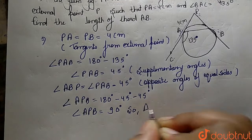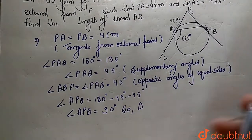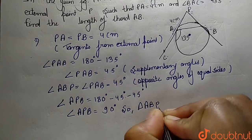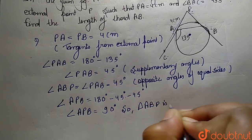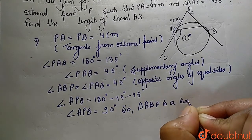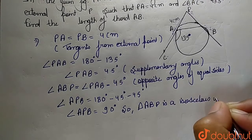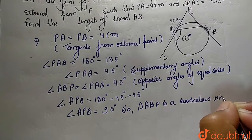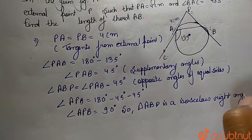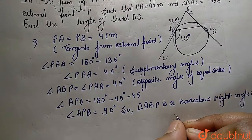Since angle APB is 90 degrees, it means our triangle ABP is an isosceles right angle triangle.